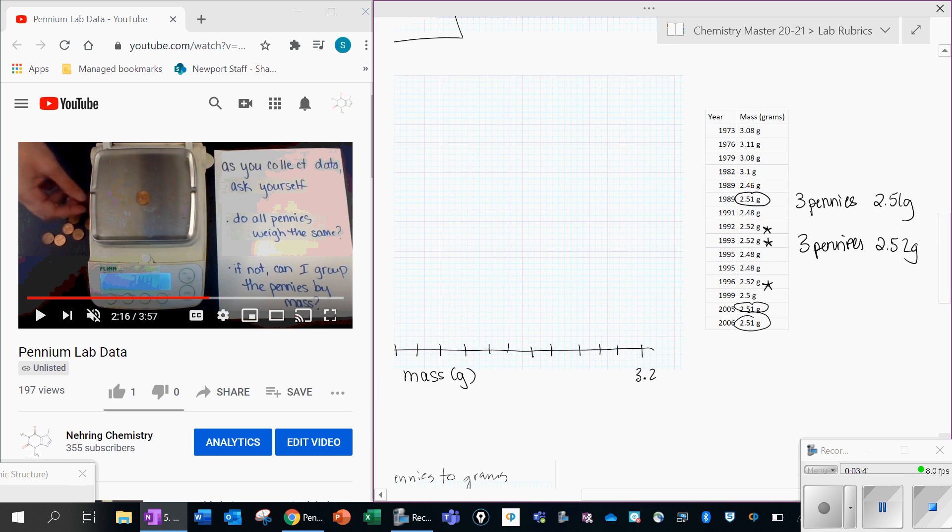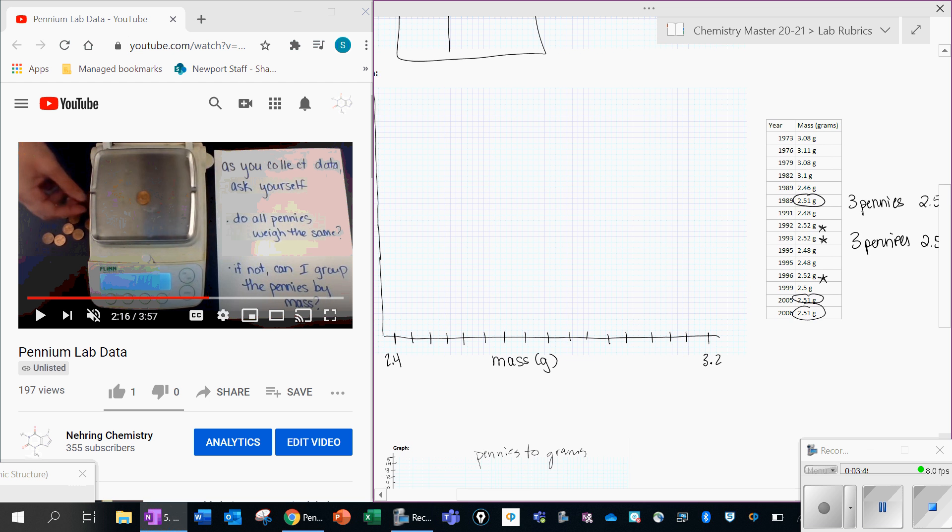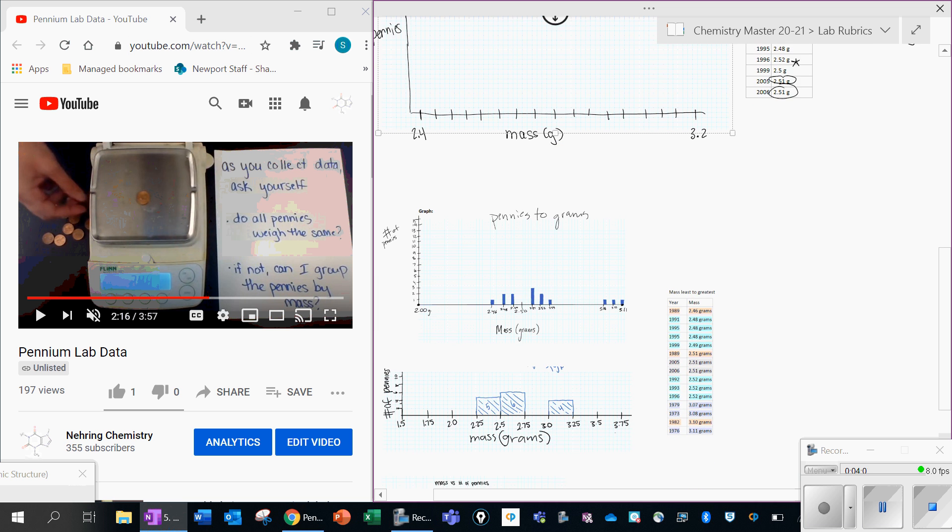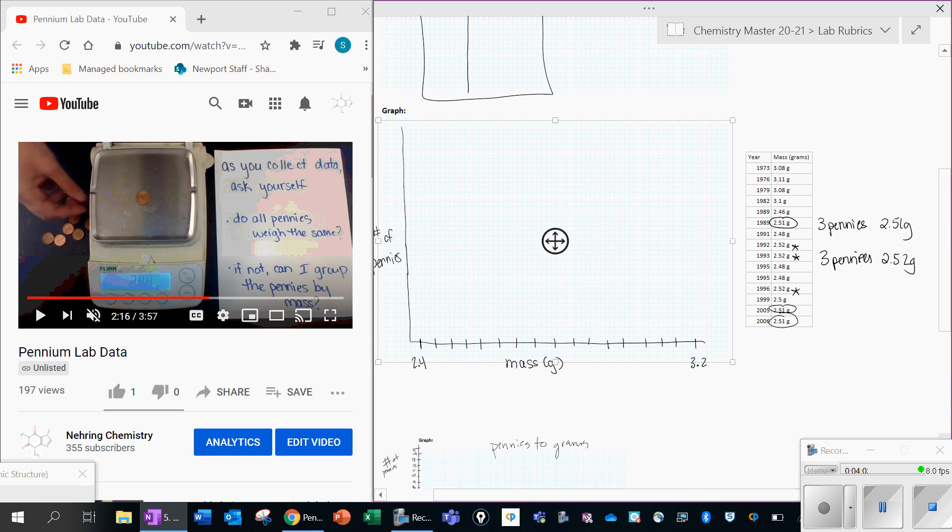So what I would do is at my 2.52, I would draw a bar that's about three units high. So I think I never have more than maybe about three pennies that have the same mass. I don't know. So you figure out what your scale is here. I don't think we need our scale to be very high. Maybe this is like one penny, two pennies, three, four, five, six. And I'd say over here that at 2.5 grams, I have three pennies that weigh 2.5. So this is what I mean by a bar graph.